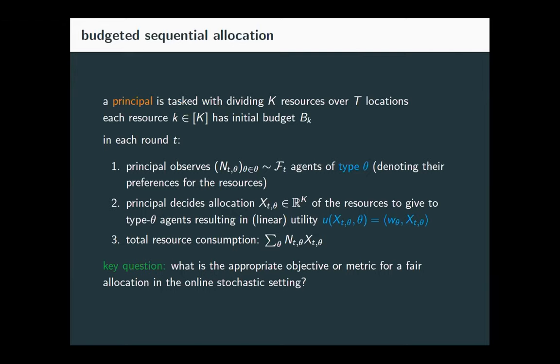N_T,theta is the number of people that arrive at location T who are of type theta. We think of there being a finite number of types.